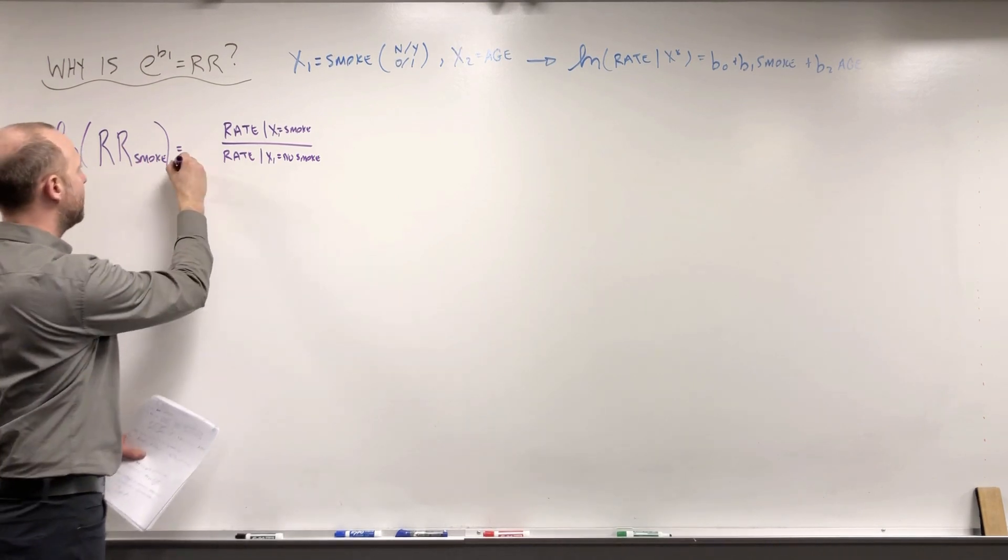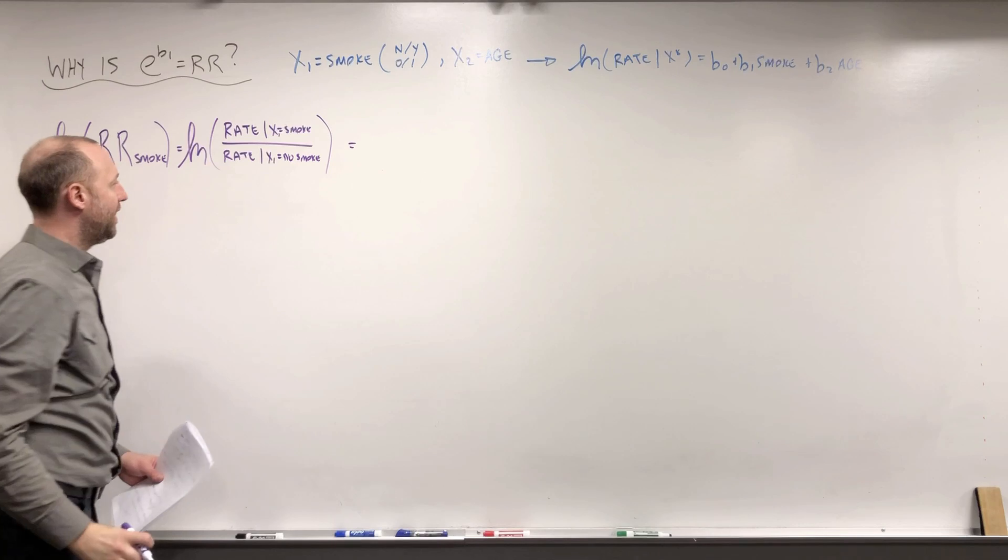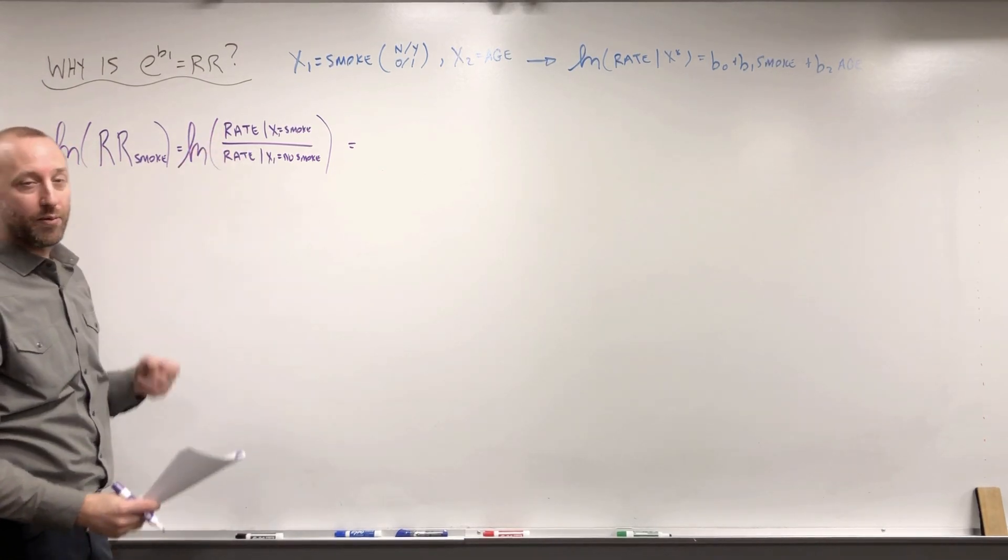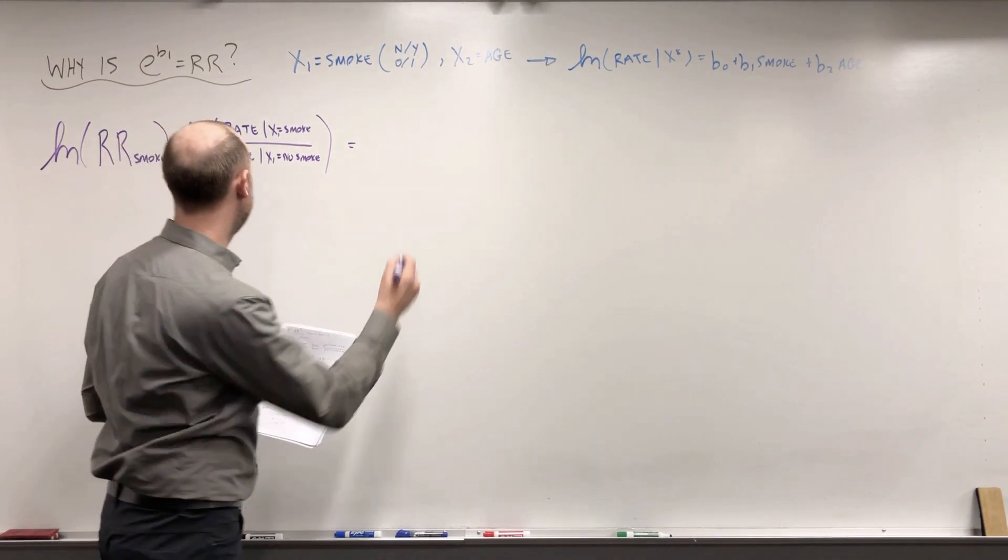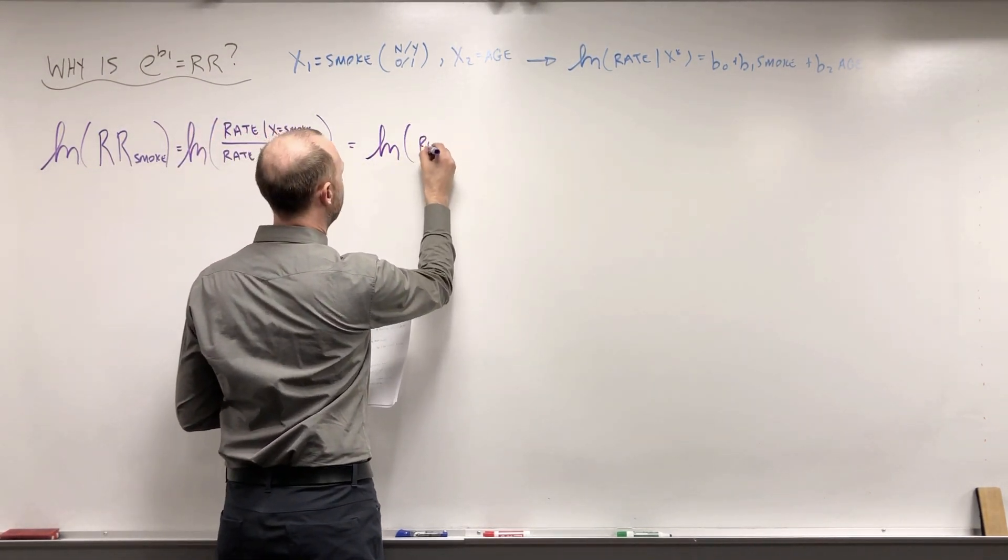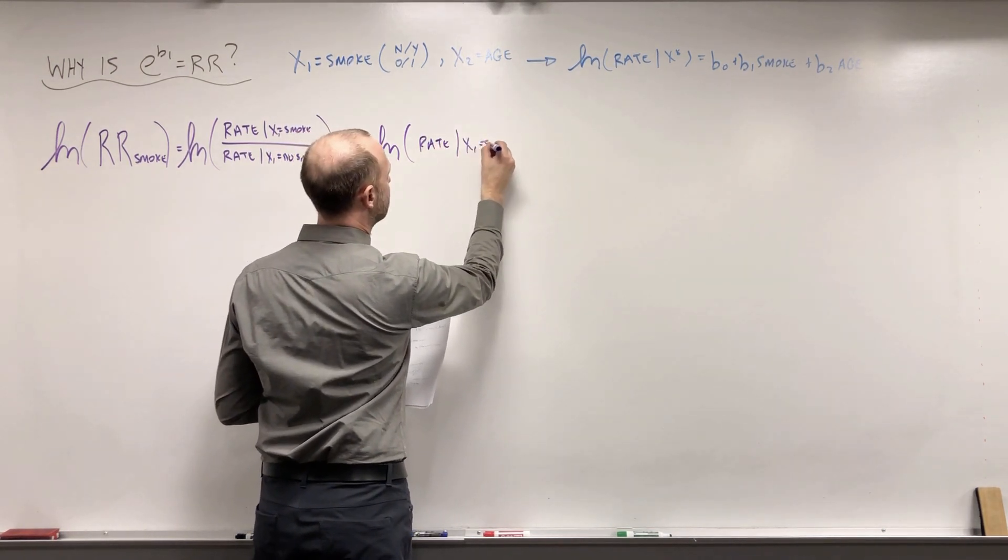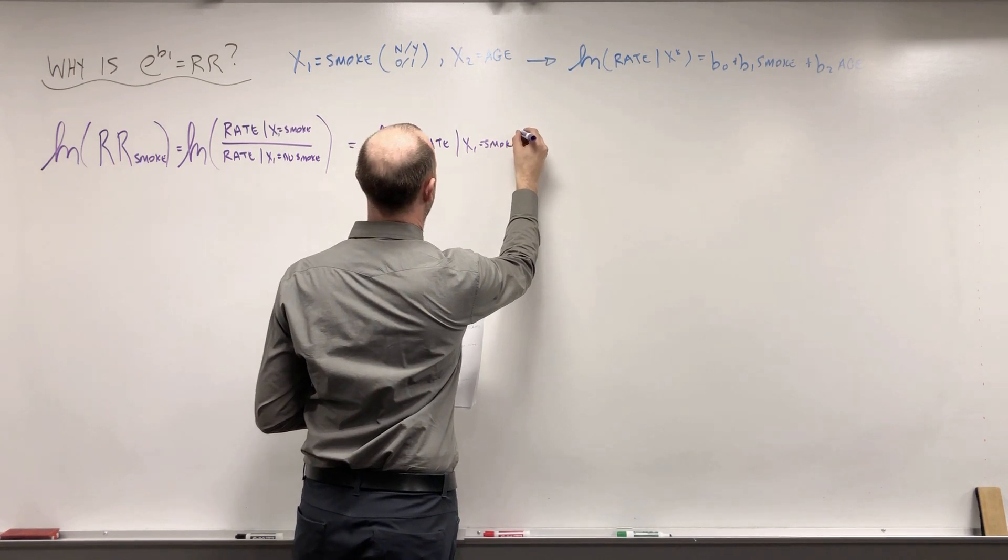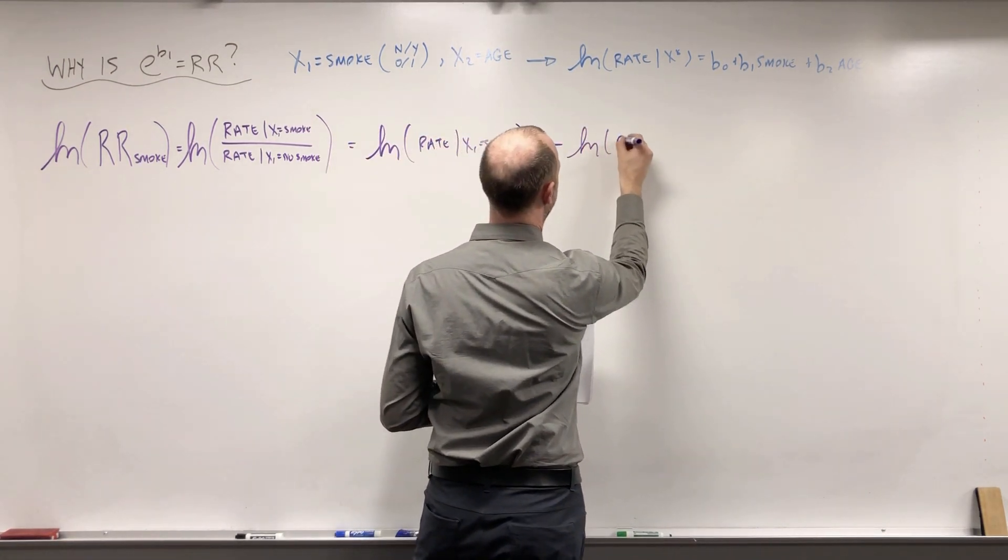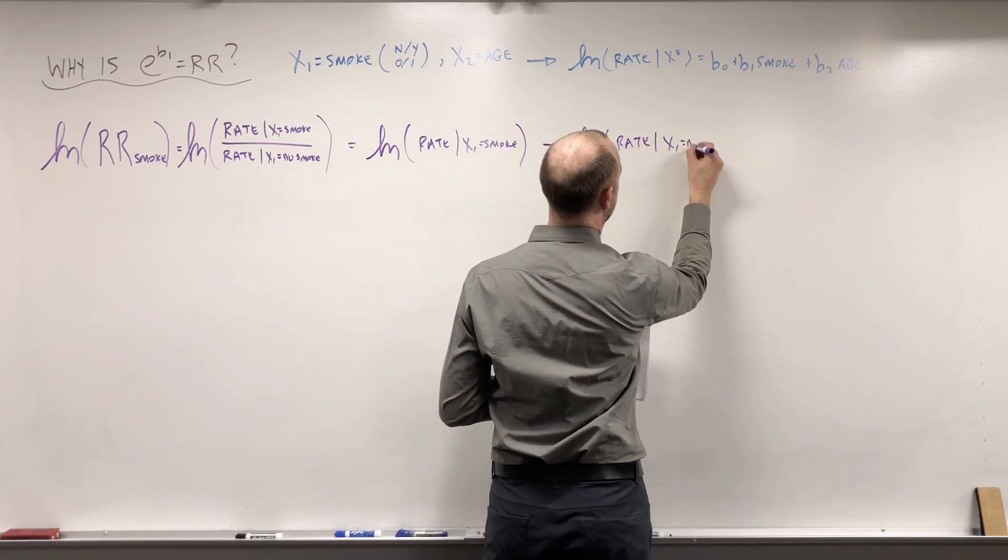The log rate ratio is the log of this here, and as we've seen throughout the course, the log of a over b can be written as log of a minus log of b. So we can write this as the log rate given x1 is smoking minus log rate given x1 is no smoking.